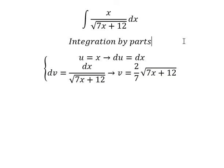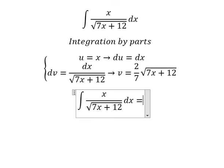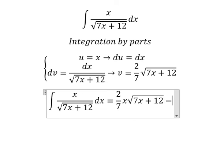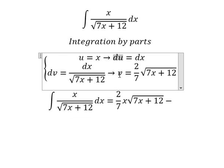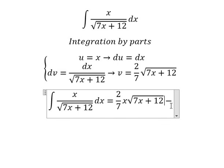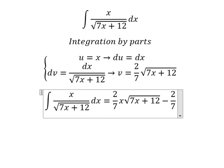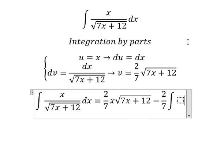Next, we have u multiplied by v minus the integral. We have u multiplied by v, so we have 2 over 7, and we have the integration of the square root of 7x plus 12.